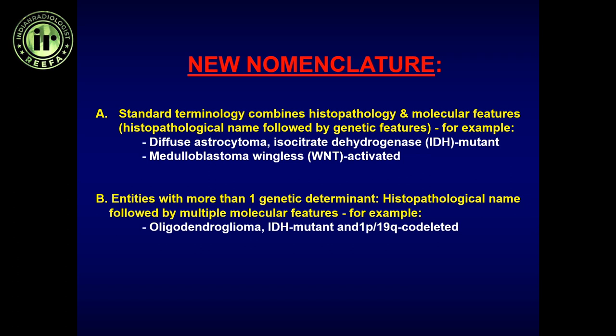With the new 2016 nomenclature, we first call the tumor by its histology and then add the genetic marker. For example, an astrocytoma associated with IDH mutant type, or a medulloblastoma which is WNT-activated. You no longer just say astrocytoma or GBM or oligodendroglioma and stop there — you must mention the IDH type, co-deleted or not co-deleted, TERT, ATRX, P53. Tumors can have more than one genetic marker, such as an oligodendroglioma that is IDH mutant as well as 1p19q co-deleted.